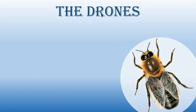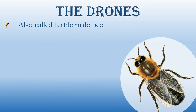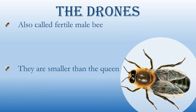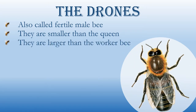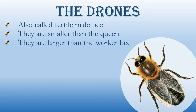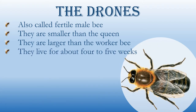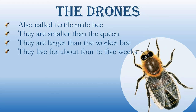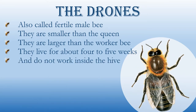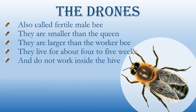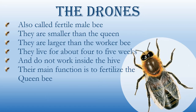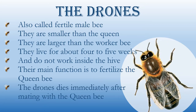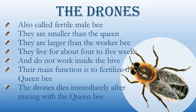The drones are also called fertile male bees. They are smaller than the queen bee but larger than the worker bee. They live for about four to five weeks and do not work inside the hive. Their main function is to fertilize the queen bee. Drones die immediately after mating with the queen bee.